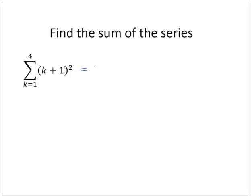So if k equals 1, we would have 1 plus 1 squared. If k equals 2, we would have 2 plus 1 squared. If k equals 3, we'd have 3 plus 1 squared. If k equals 4, we'd have 4 plus 1 squared.